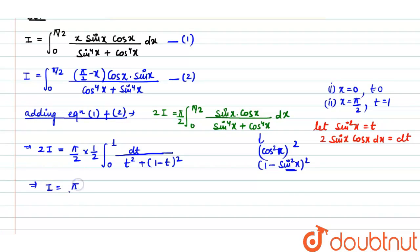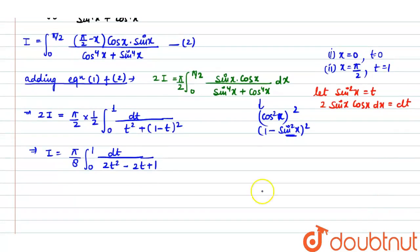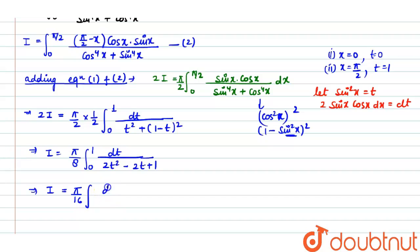Expanding the denominator: t² + (1−t)² = t² + 1 − 2t + t² = 2t² − 2t + 1. So I equals π/8 times the integral from 0 to 1 of dt over 2t² − 2t + 1. Dividing by 2 and factoring, this becomes π/16 times the integral of dt over t² − t + 1/2.